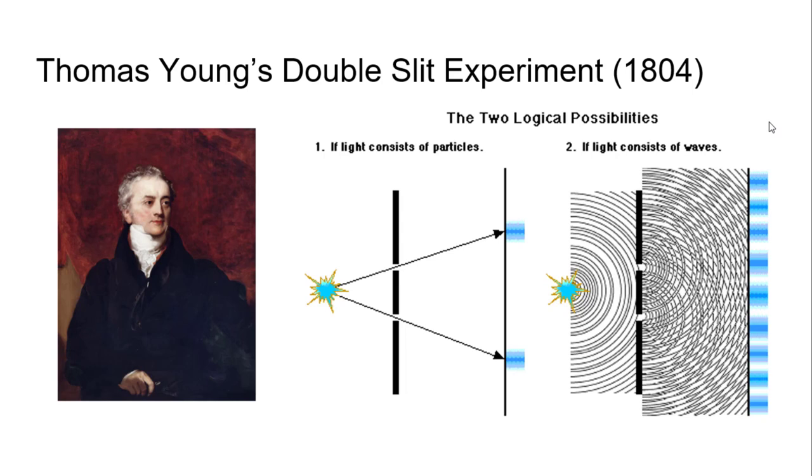At the time they were really trying to figure out what is light. There were two logical possibilities: that light is particles or light consists of waves. If it were particles, if you shine light through these double slits, two slits that are very close to each other...